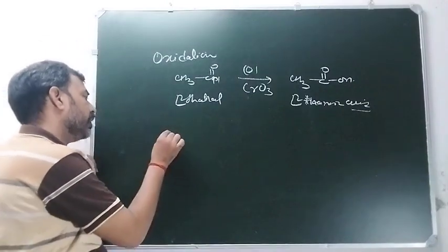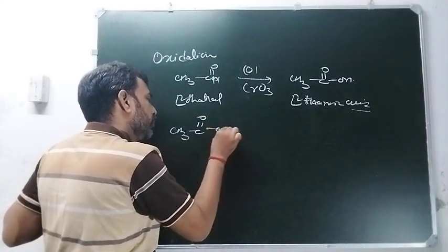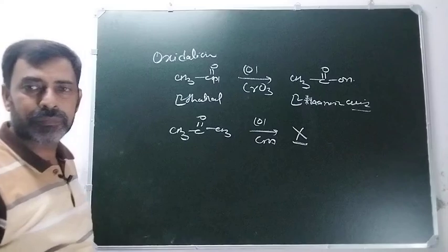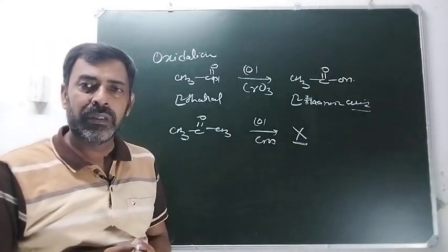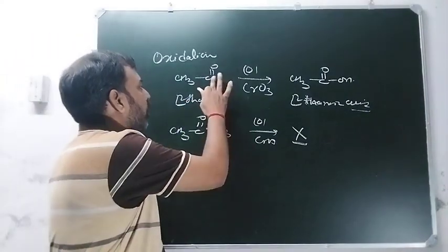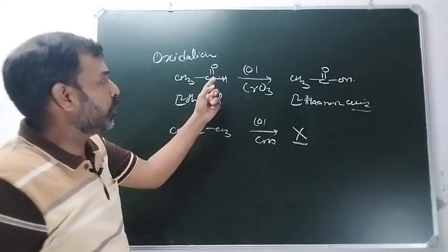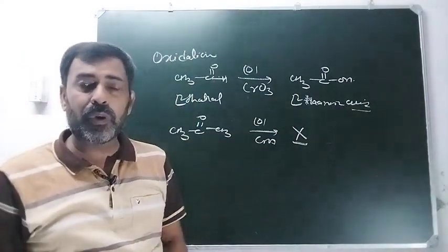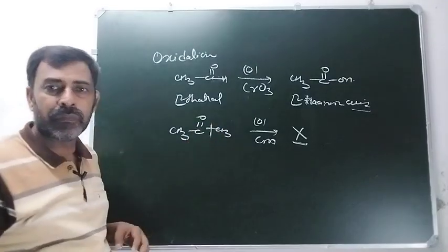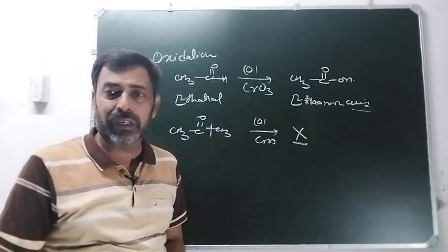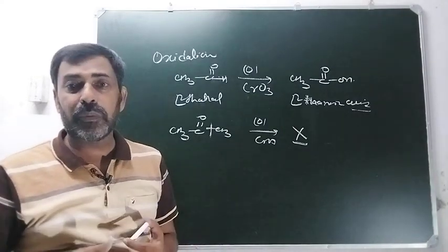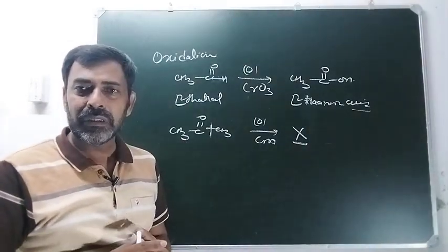लेकिन अगर यही reaction हम ketone के साथ कराएं - CH3, CO, CH3 - oxidizing agent लगाके oxidation कराने की कोशिश करें, तो यहाँ पर oxidation नहीं होता। Oxidation क्यों नहीं होता? यहाँ पर जो carbon-hydrogen bond है, वह टूट रहा है जिसकी जगह पर OH आके लग रहा है। But homo bonds इतनी आसानी से नहीं टूटते। Carbon-carbon bond must be a stronger bond than the carbon-hydrogen bond, और जब यह bond टूटेगा नहीं तो कोई दूसरा species लग भी नहीं सकता।